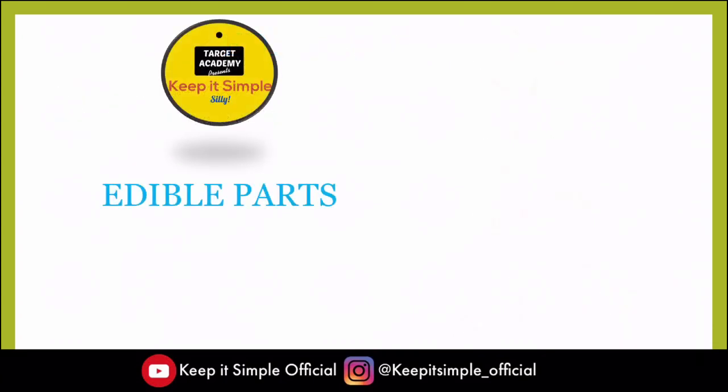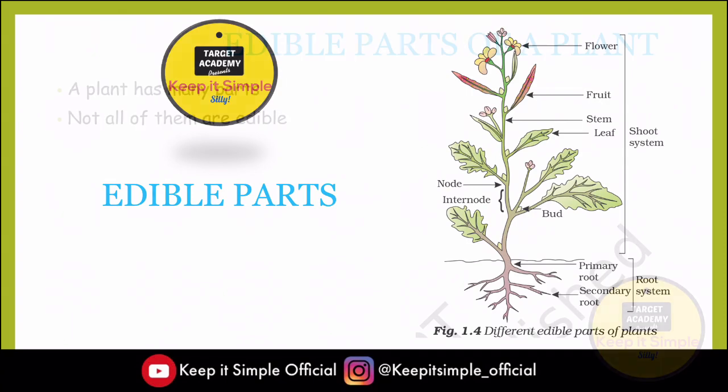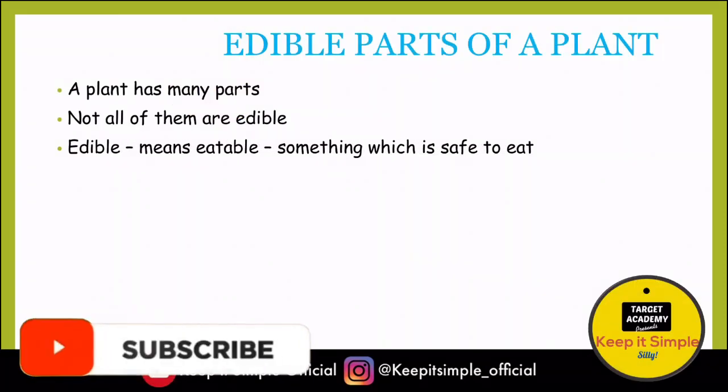Plants also have different parts which may be edible. You know that there are many parts of one plant — there are stems, roots, leaves, fruits, and flowers. But not everything is edible. What does edible mean? Edible means which we can eat. So we have different edible parts of plants: flowers, fruits, roots, stems, and leaves.